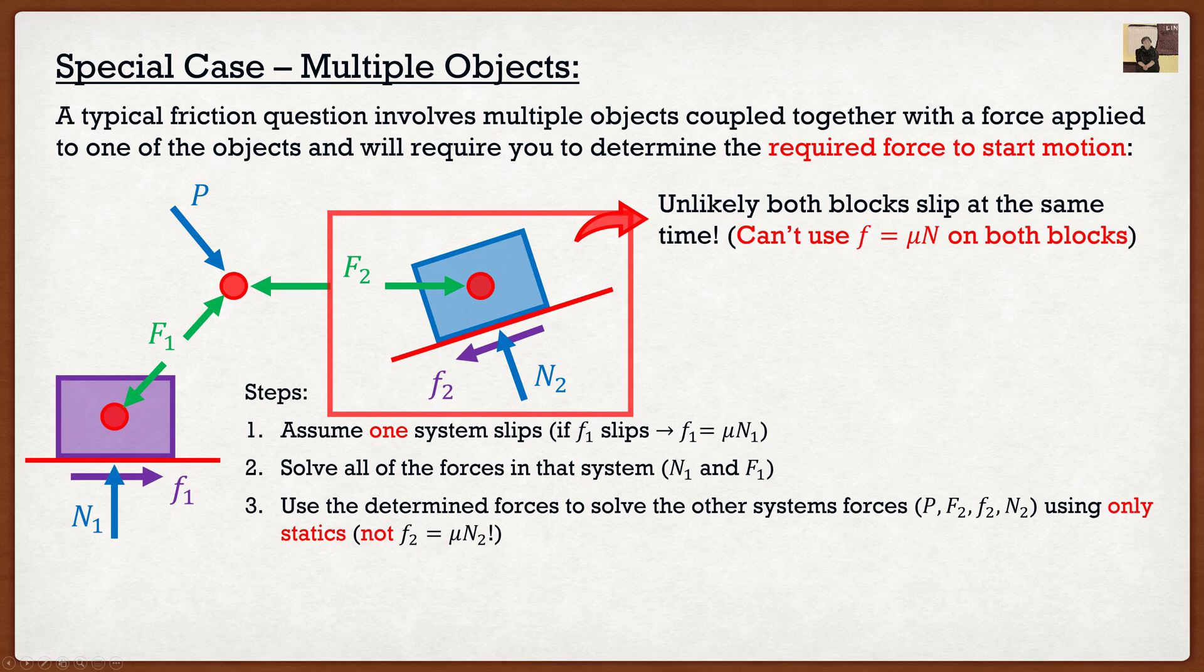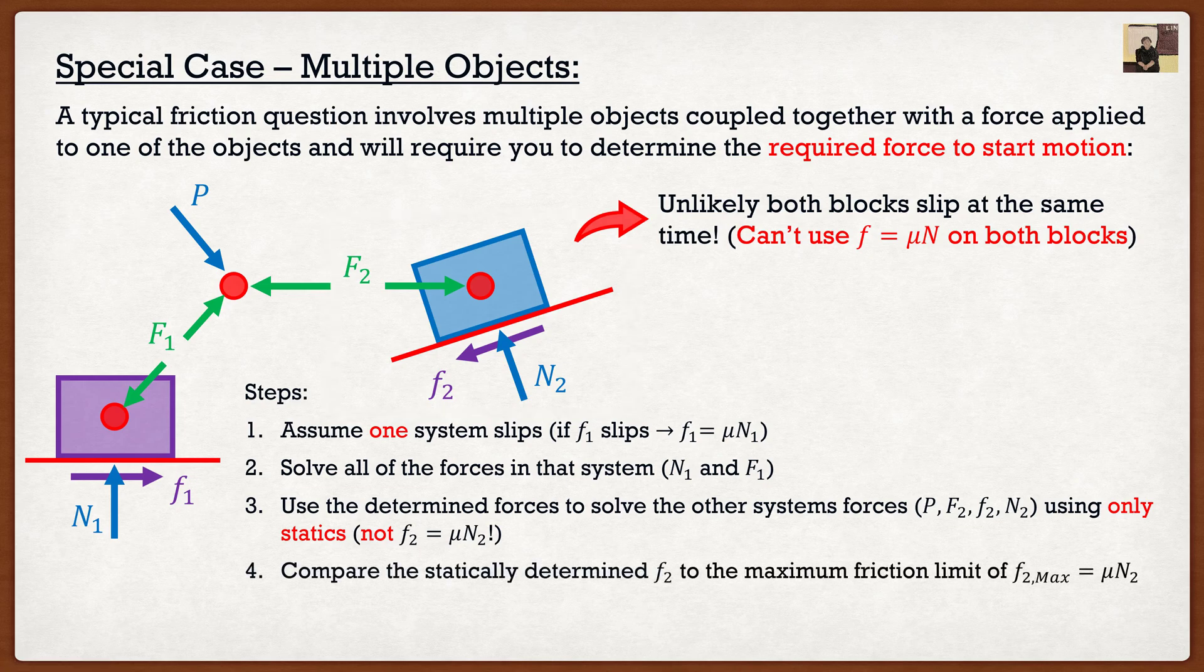I solved this one using statics. All right, there's the trick. Now once we do that, we have F2 solved through with statics. And all we're going to do is we're going to compare it to our maximum friction limit of mu times N2. So again, I know what N2 is now, all I have to do is mu times N2 and then I basically get two values.